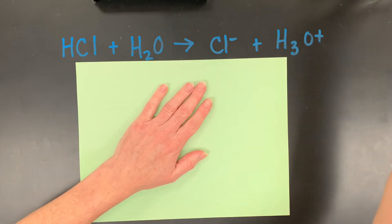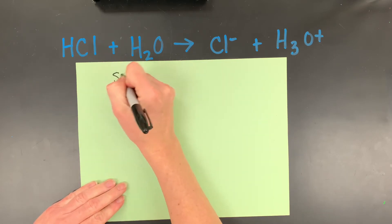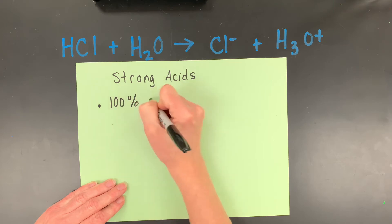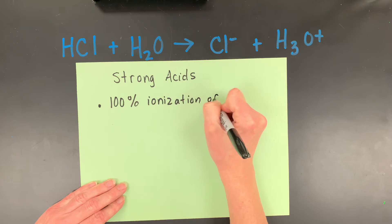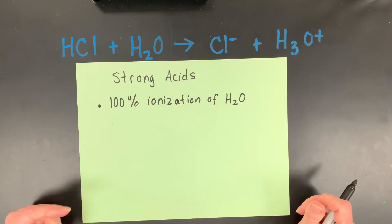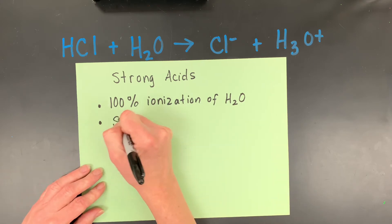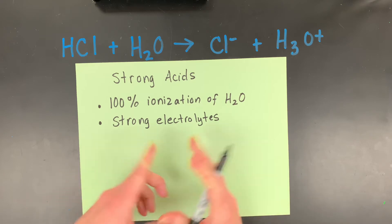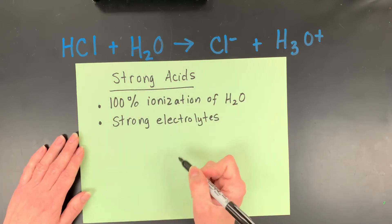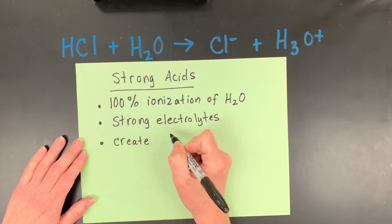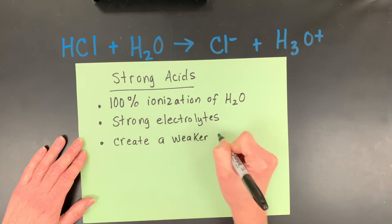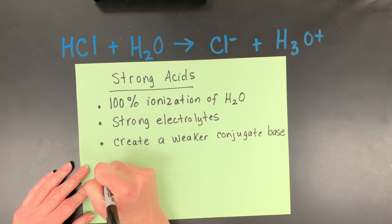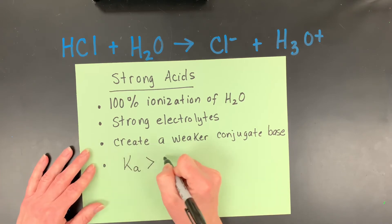So let's get started here and list some facts about our strong acids. Strong acids have 100% ionization of water. You could also say that 100% dissociation, that they break into ions and then they ionize the water. They will be strong electrolytes. That's how you can prove with a lab technique that they are strong acids. Next, they create a weaker, in fact really weak, a weaker conjugate base pair. Remember the conjugate acid-base pairs from a previous video. The last thing is a lot of times we don't really write the equilibrium expression, and we just say the Ka is greater than one, and it's large.